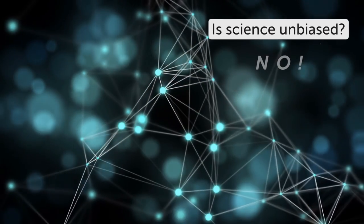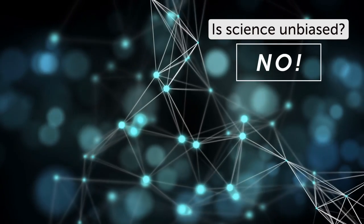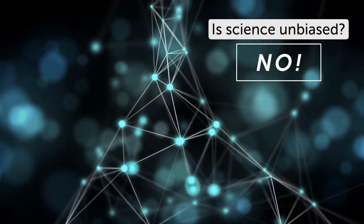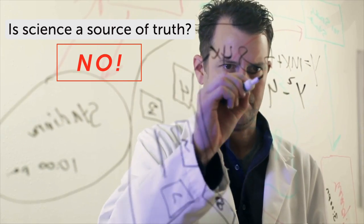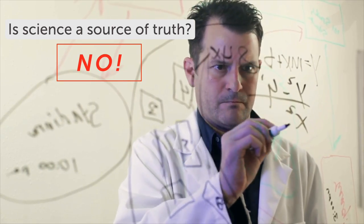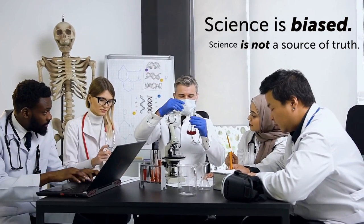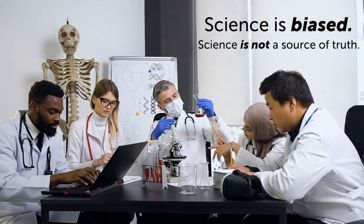Science is often seen as unbiased, where the personal beliefs of the scientist do not affect his scientific work. Science is also seen as a source of truth. Both thoughts are incorrect. Science is biased. Science is not a source of truth.